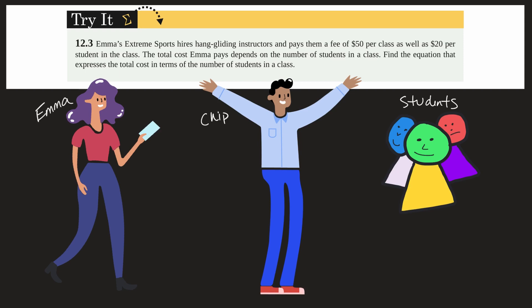Emma's Extreme Sports hires hang gliding instructors. In this case we'll say Emma hires Chip. He's going to be her hang gliding instructor and pays him a fee of $50 per class as well as $20 per student in the class. The total cost Emma pays depends on the number of students in a class. Find the equation that expresses the total cost in terms of the number of students in a class.